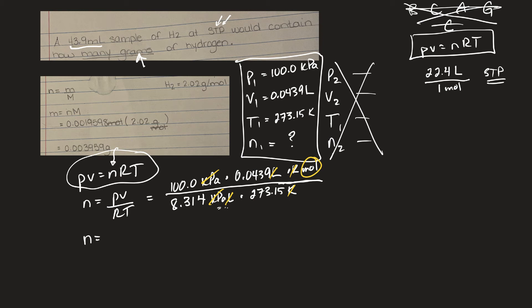Okay, so the moles are going to be equal to, let's do this on our machine. Okay, so 100 times 0.0439 divided by, and then I'm going to put these two in brackets.